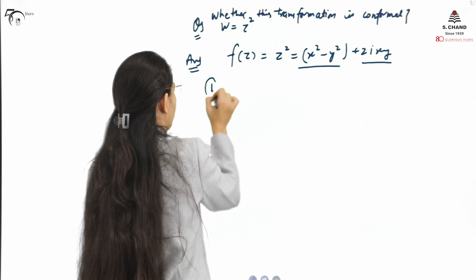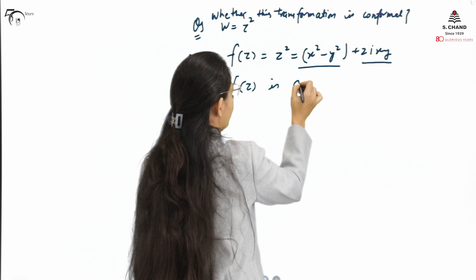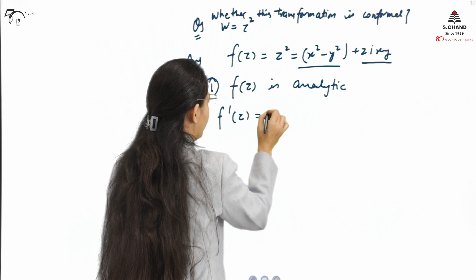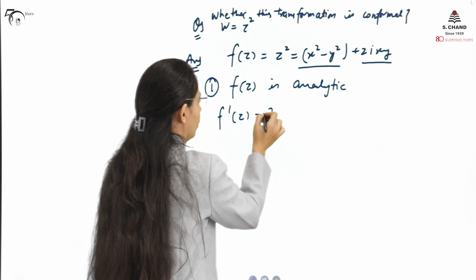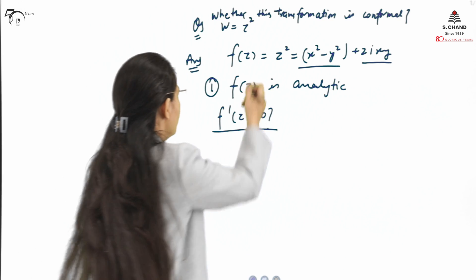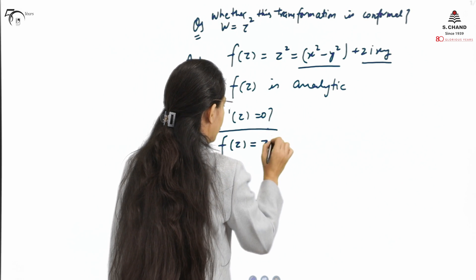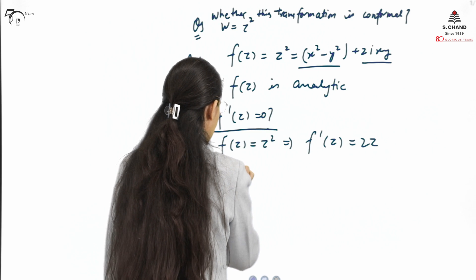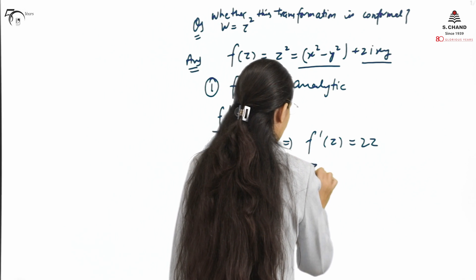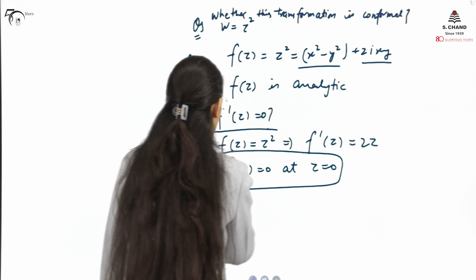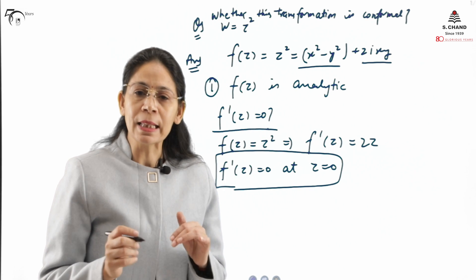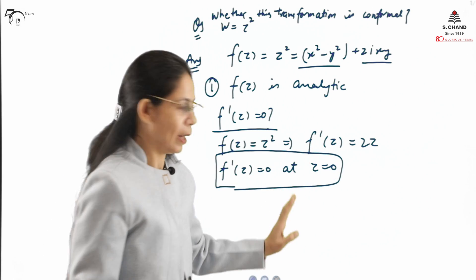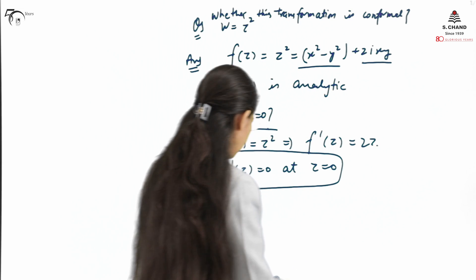So the first condition is satisfied: F(z) is analytic everywhere. The second condition is to check whether F'(z) equals zero or not. Since F(z) equals Z squared, F'(z) equals 2Z, and F'(z) is zero only at Z equals zero. At all other points, F'(z) is not zero.